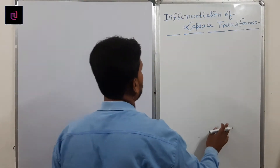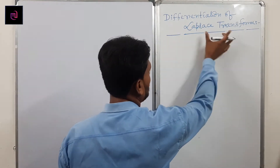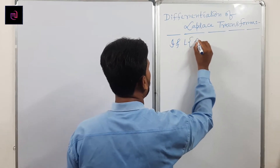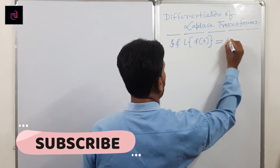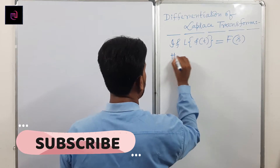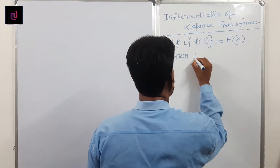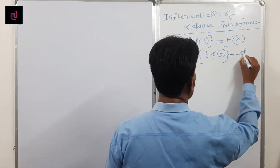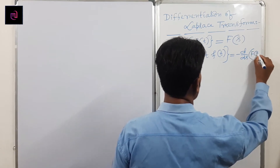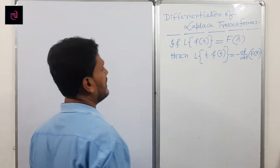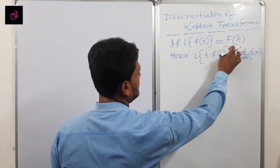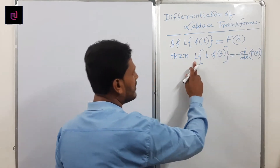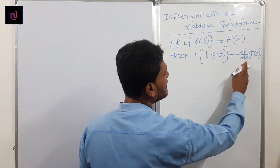Differentiation of Laplace transform. We need to find the differentiation of Laplace transform. What is the statement? If Laplace of f(t) equals F(s), then Laplace of t·f(t) equals minus d/ds of F(s).